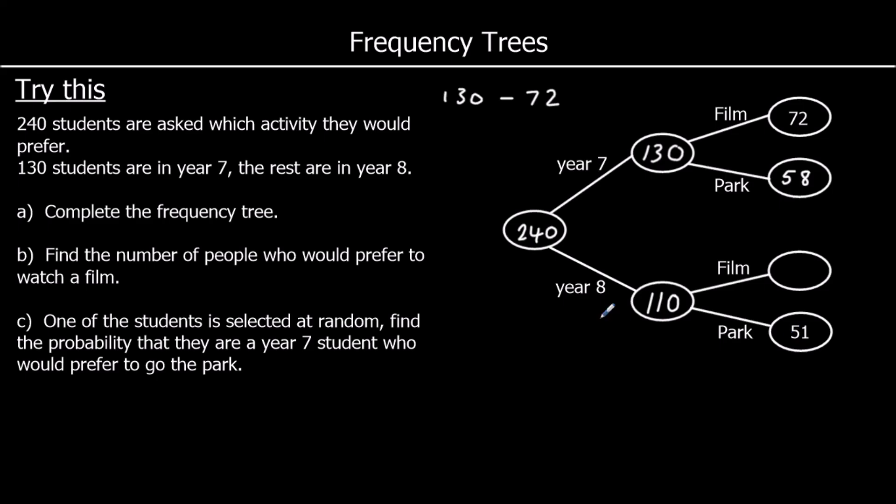51 year 8s want to go to the park. How many want to watch the film? So 110 take away 51, so that's going to be 59. So that's the frequency tree completed.